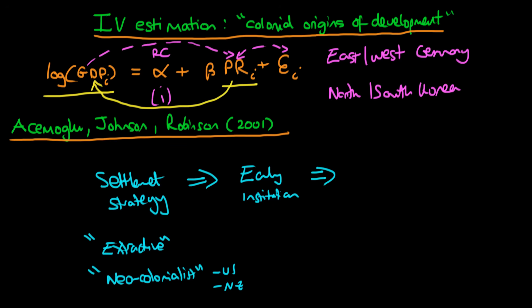These early institutions, whether they were bad or good, fed through to current level of property rights, which in turn affected the level of GDP in the country which we observe at the moment. So the initial settlement strategy undertaken by colonialists actually had quite a significant effect on current differences in GDP. That's the causal relationship they were interested in.